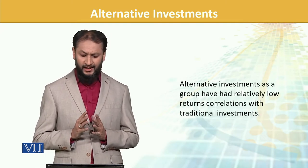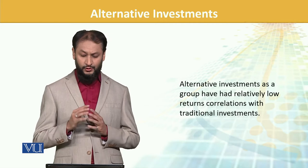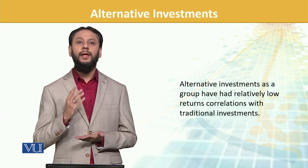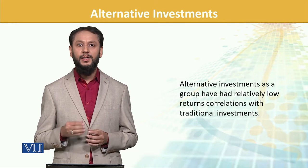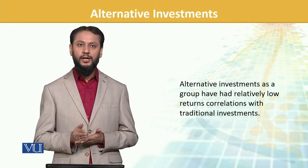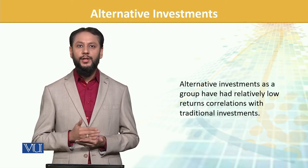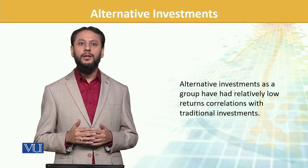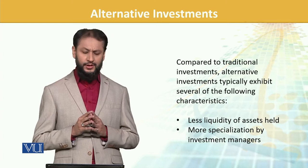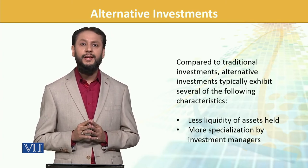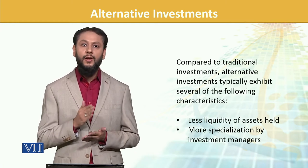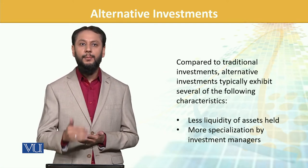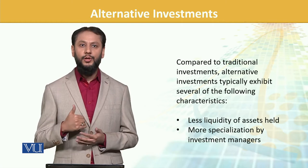Alternative investments as a group have had relatively low return correlation with traditional investments. Yeh bada important point hai ke alternative ki correlation traditional se kam hai. Agar yeh bhi bhoat zyada hoti toh phir toh woh faida hi nahi tha. Humne kaha tha ke diversification ka benefit tab aata hai jab correlation kam ho. Toh yeh hume woh benefit deta hai. Ke correlation kam hoti hai toh we get the advantage of diversification and lower risk-adjusted return when we add alternate investment in our portfolio. Ab yeh uske features hain jo ke alternative mein hain jo ke isko thoda usse differ karte hain.